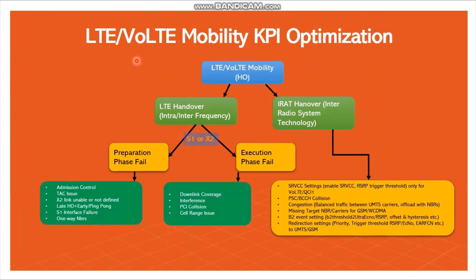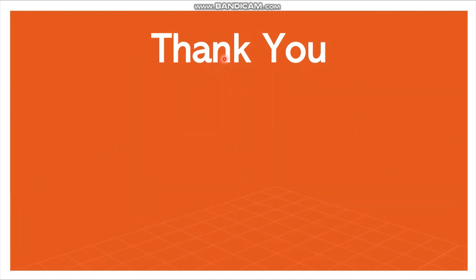In this video, you have learned the mobility KPI optimization theory and some basic parameter names. In part 2, I will bring Nokia-specific parameters and correction parameters related to mobility KPI optimization, including default values and the range to modify or retune each parameter. This way you can understand mobility completely and implement it in your network to improve the handover success rate. Thank you very much, and keep subscribed to find upcoming videos.